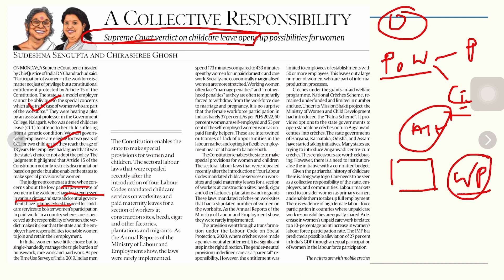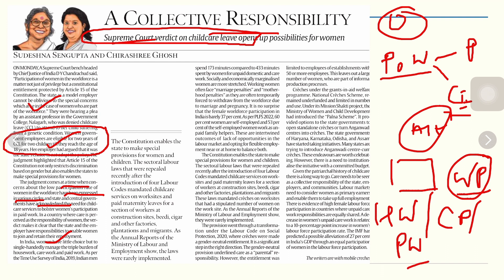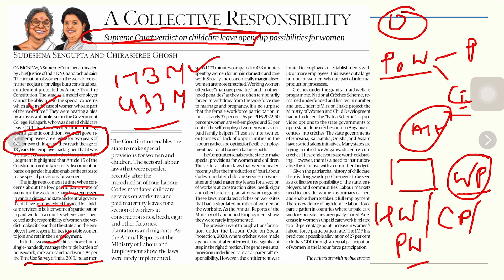Women government employees are eligible for two years of child care leave for two children until they reach the age of 18 years. In India, women have little choice but to single-handedly manage the triple burden of household work, care work, and paid work. As per the Time Use Survey of India 2019, Indian men spent only 173 minutes compared to 433 minutes spent by women daily on unpaid domestic and care work.